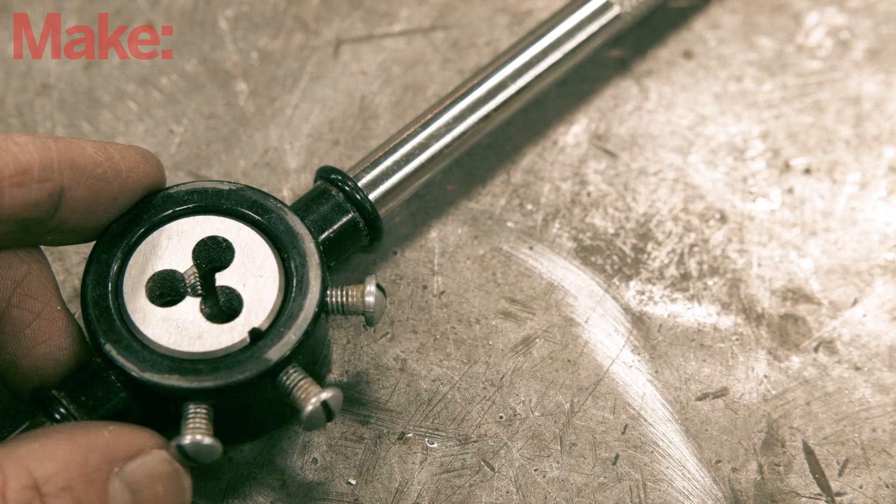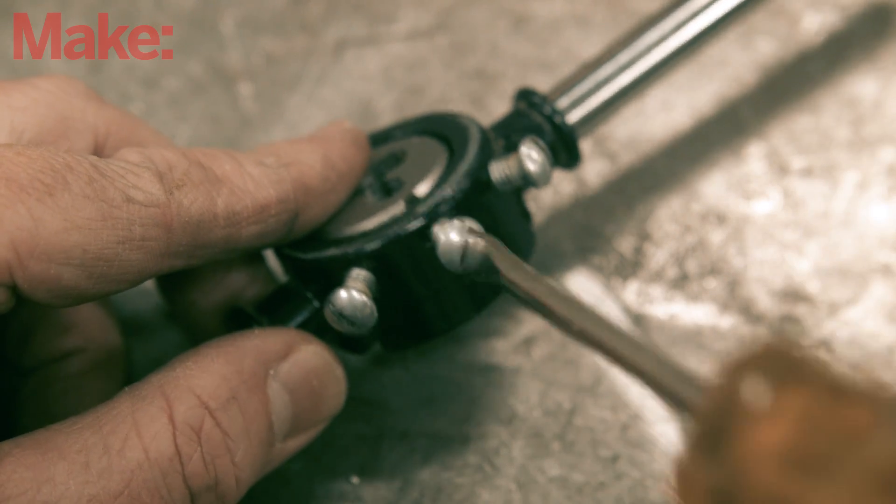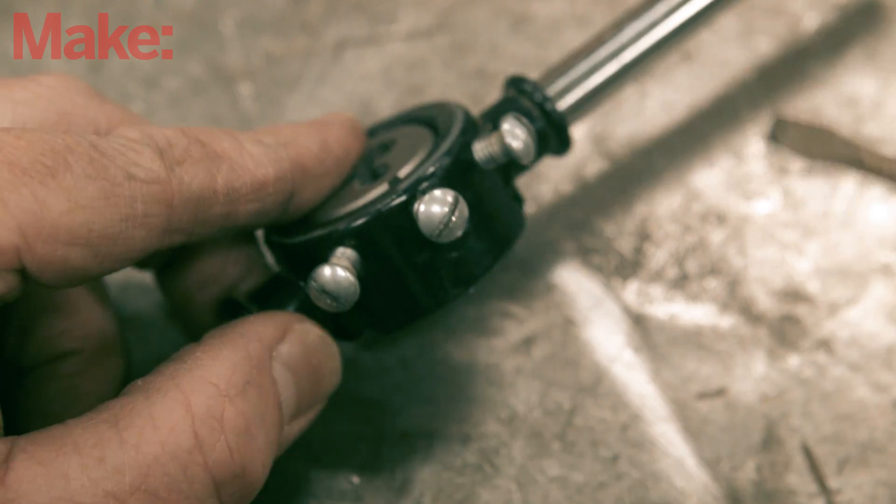After you've selected your die, you'll need to put the die into the die stock, which is similar to a tap wrench. Most die stocks have a set screw on the side which is then screwed in to tighten the die into the stock.